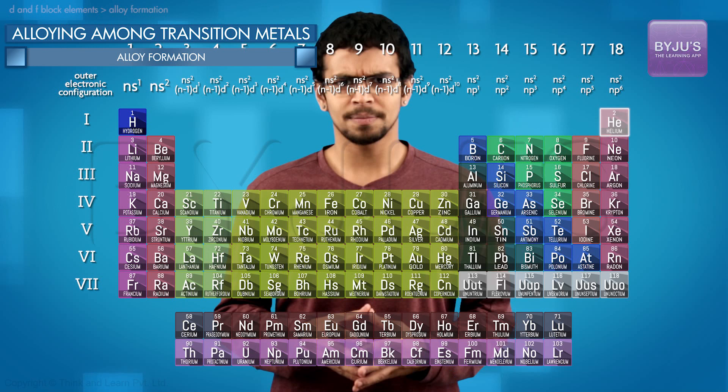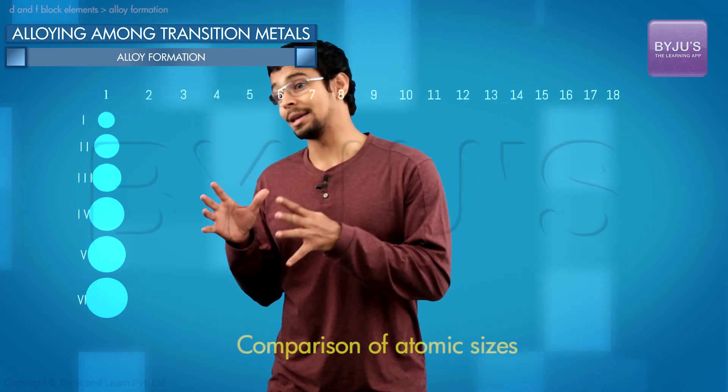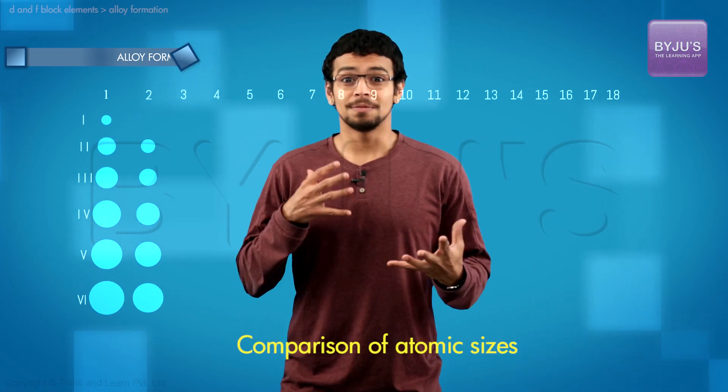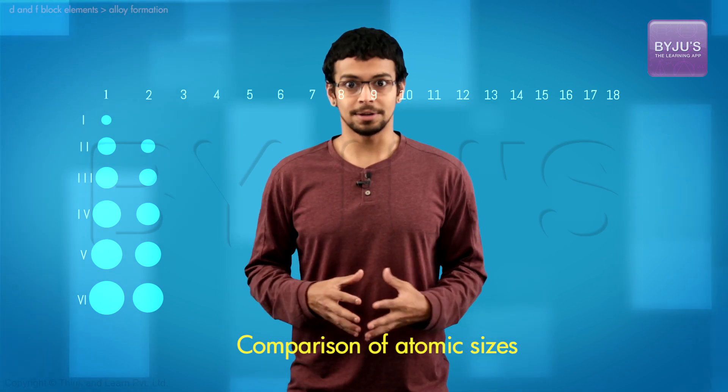Why is it that alloys are not very common among S-block elements? Every group 1 and group 2 metal is very different in size as compared to the other.